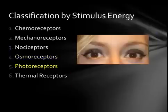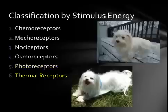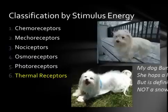Photoreceptors are the rods and cones in the retina of the eye which respond to light. Thermoreceptors detect alterations in temperature and help assist in the regulation of core body temperature.